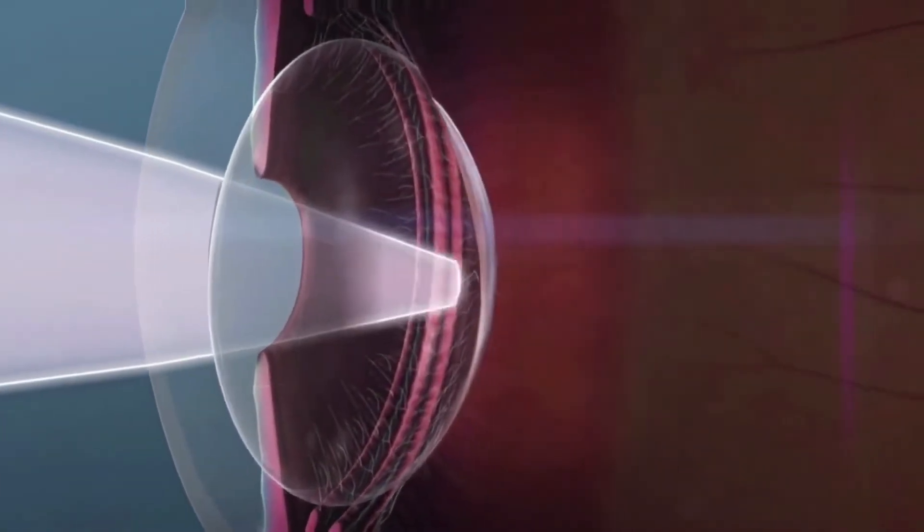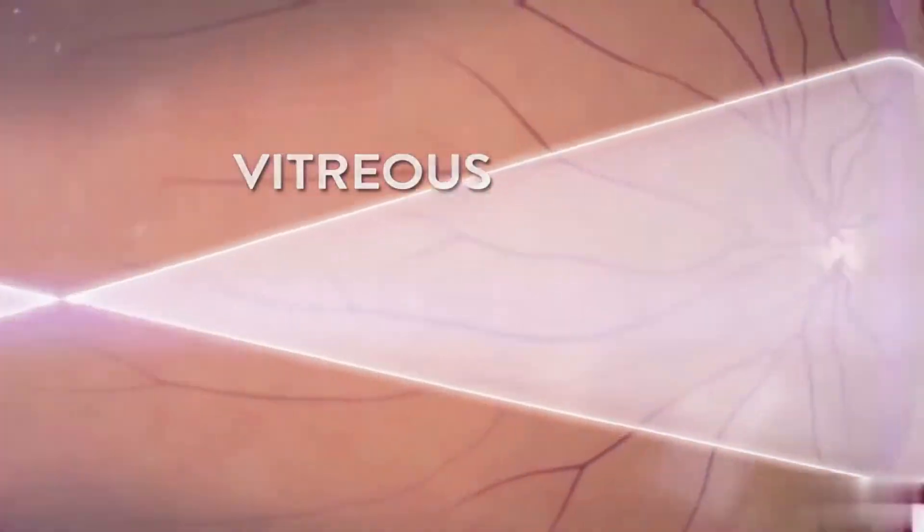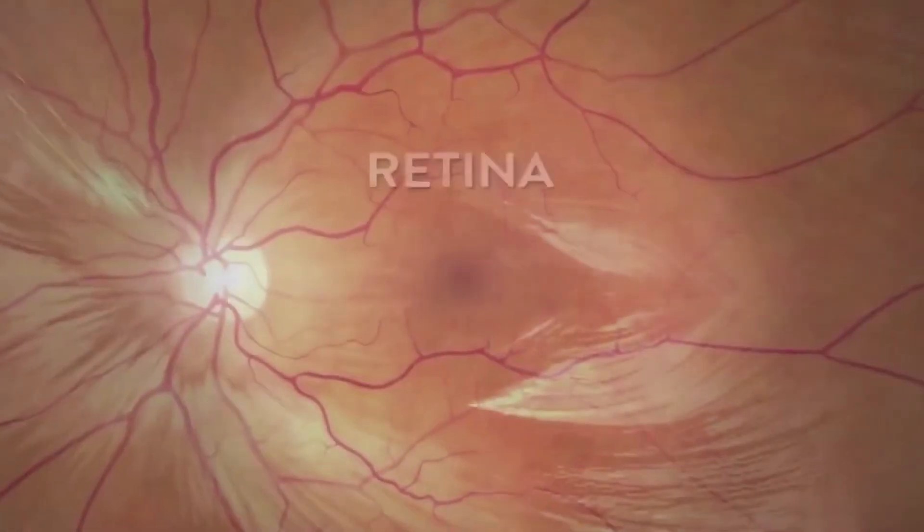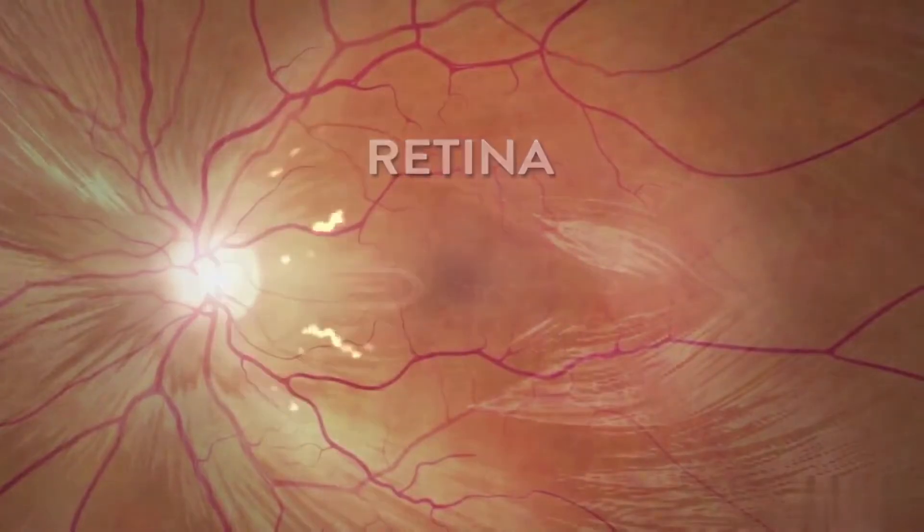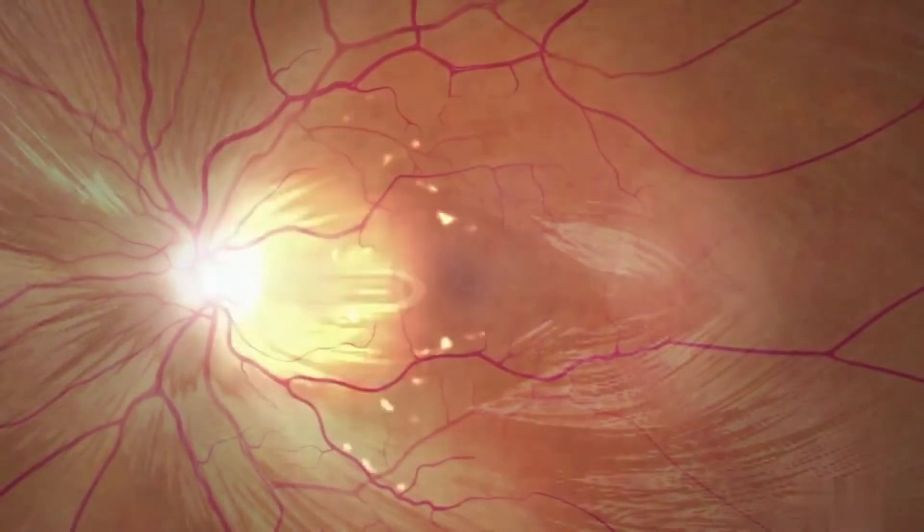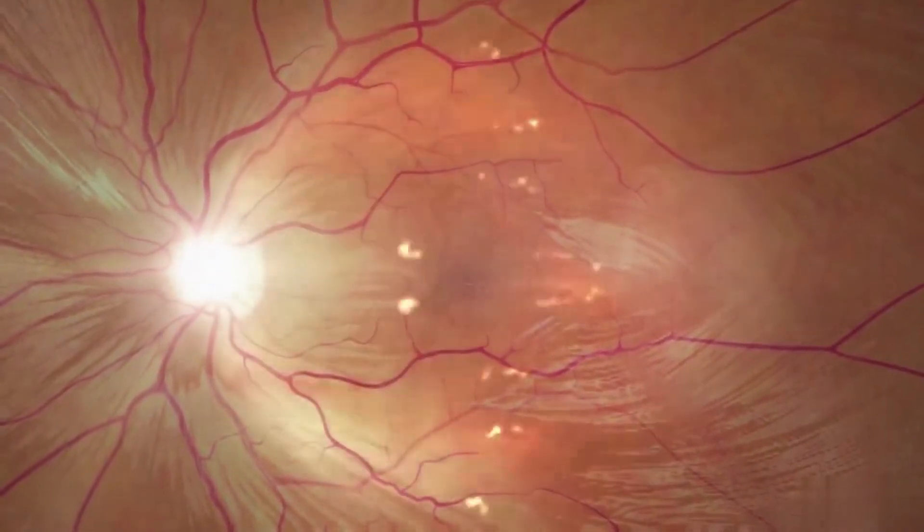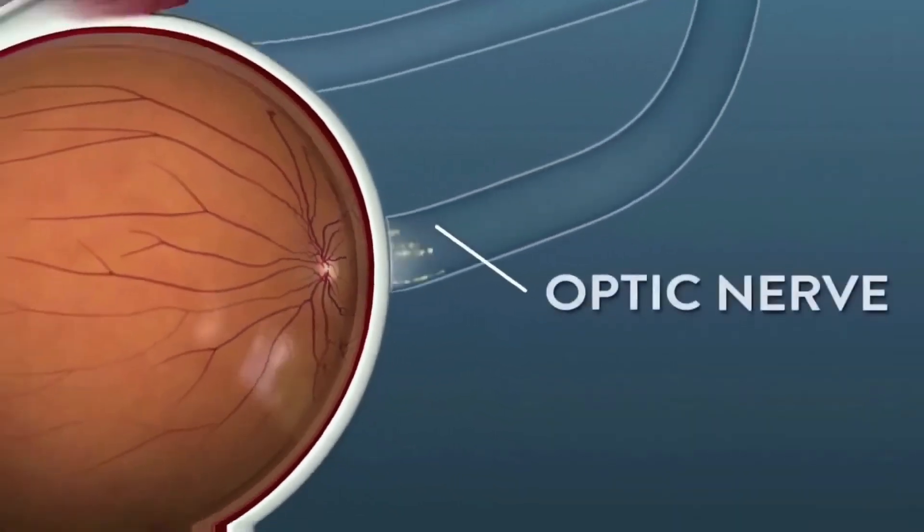Then, the lens moves light through the clear cavity called the vitreous and focuses it on the retina. The retina then converts this light energy into electrical impulses and passes it through the optic nerve, also called the second cranial nerve.